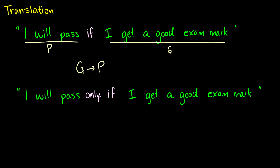Compare this with 'I will pass only if I get a good exam mark.' This is actually the opposite: P arrow G. This says if I pass the course, then I must be getting a good exam mark. So if I pass but don't get a good exam mark, the statement is false — it would mean I passed even though I didn't get a good exam mark, which is a lie.